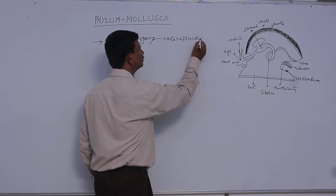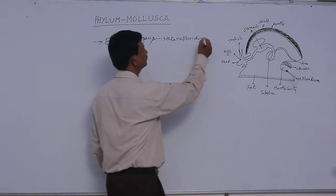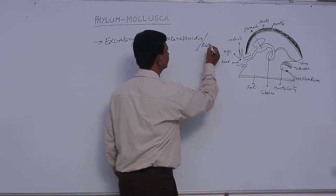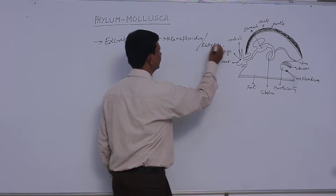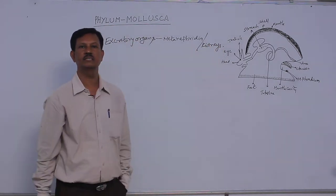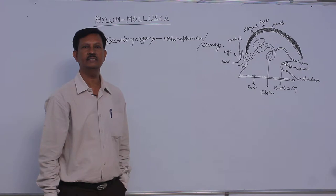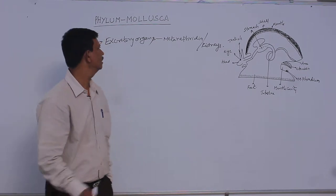Metanephridia are also known as kidneys. Such type of excretory organs are present. These organs eliminate the nitrogenous waste material from the body.